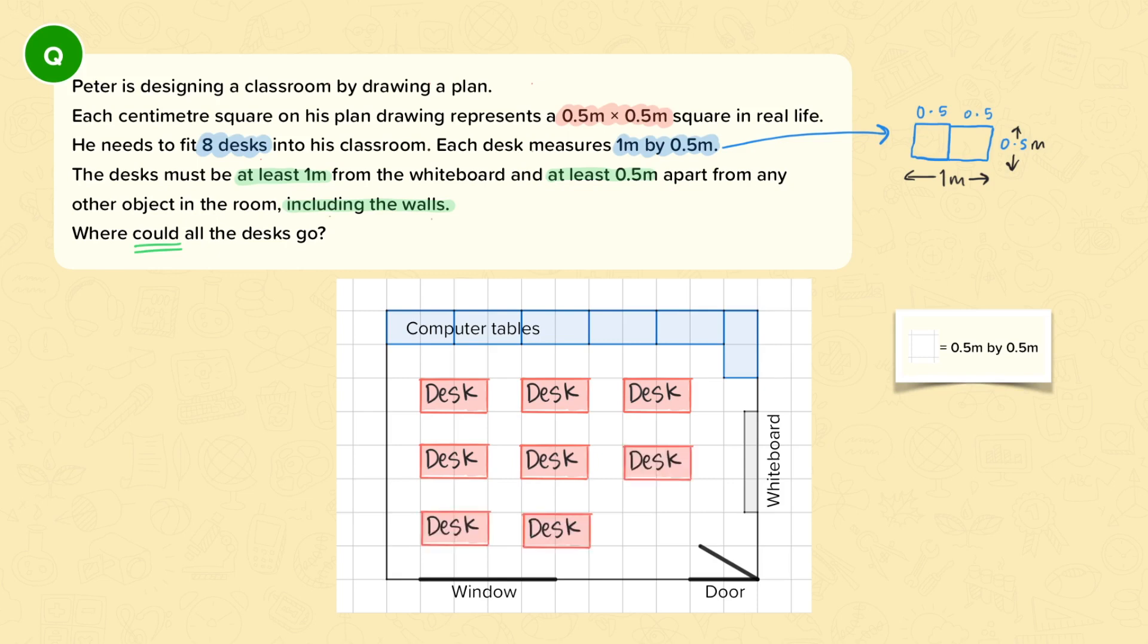So I have my eight desks and I can see that they are at least 0.5 meters away from the walls and from the objects in the room. And I need to check that they are at least 1 meter from the whiteboard. So here's the whiteboard.